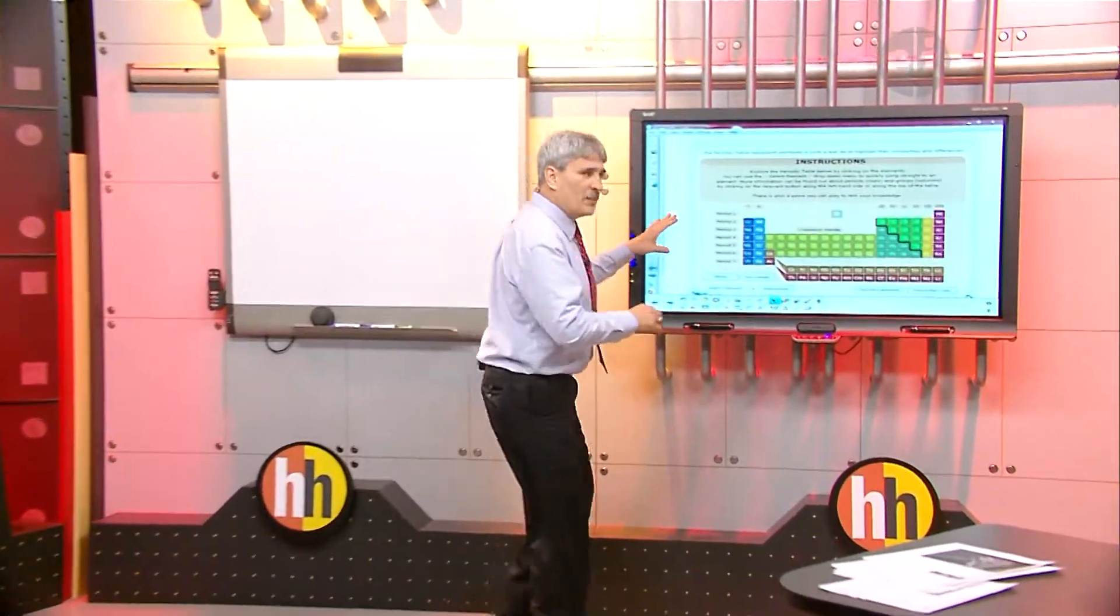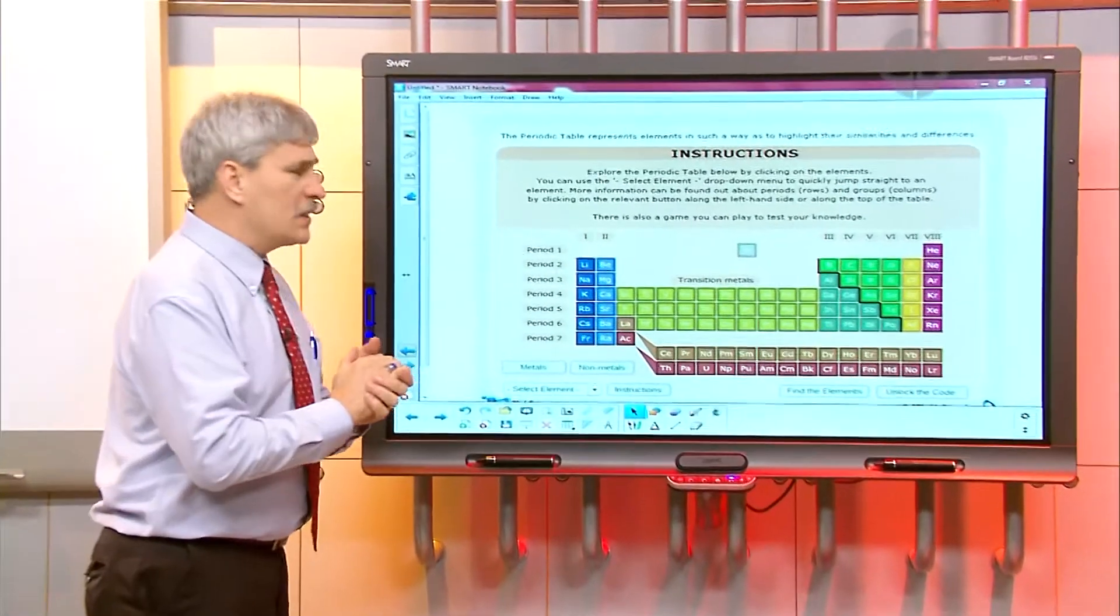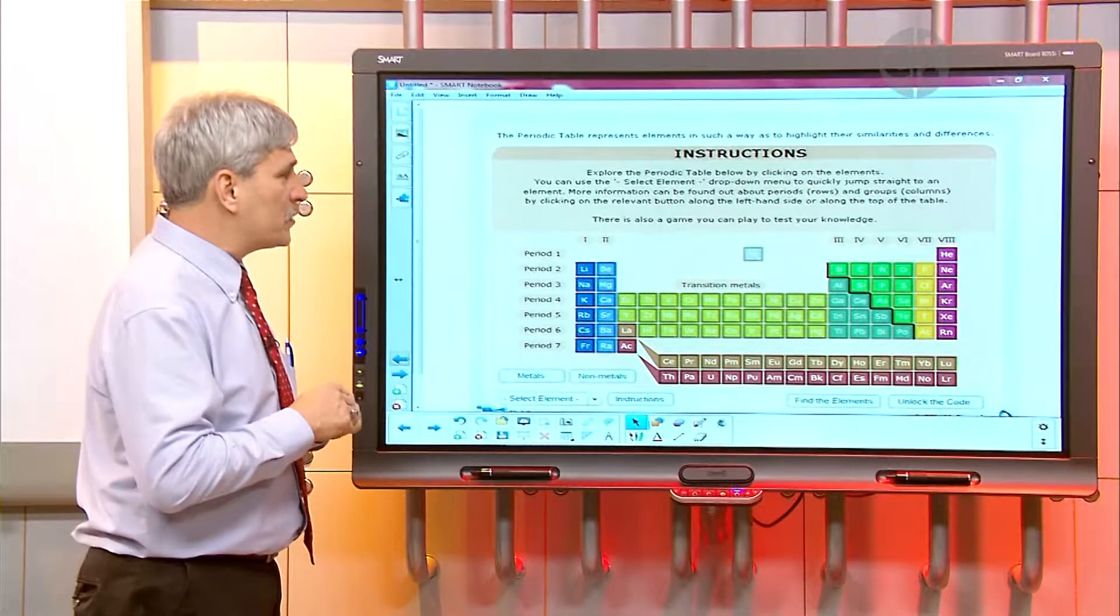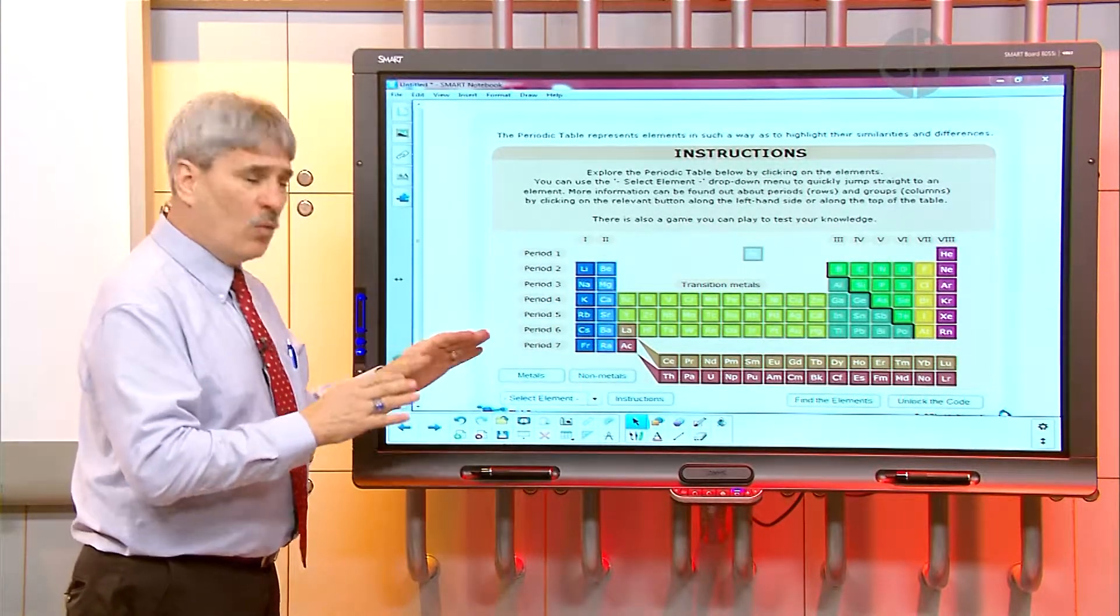Now this periodic table is the one that comes with the smart board program. It's different than the one that you're used to seeing on your chemistry reference tables, but all periodic tables have certain things in common.